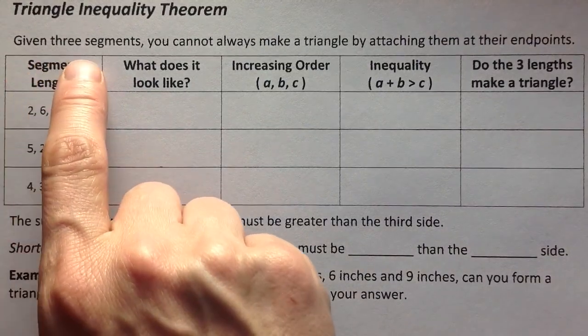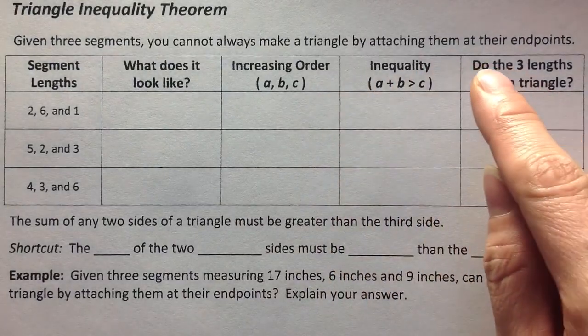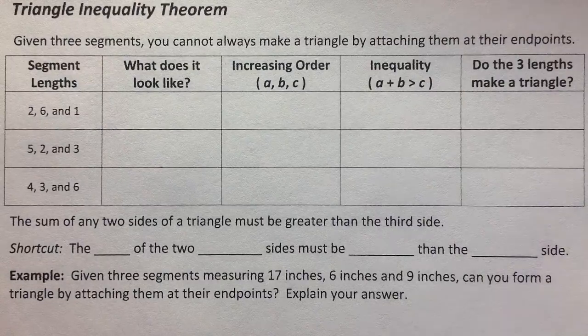So it turns out if you're given three segment lengths you cannot always make a triangle by attaching them at their endpoints. We're going to look at a couple scenarios to help understand this theorem.